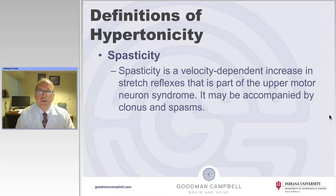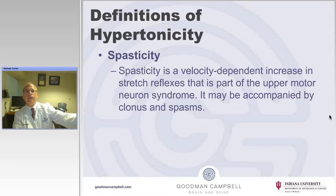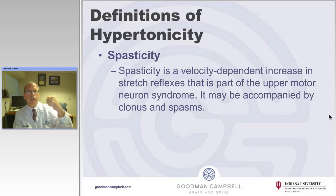Classically, there are types of hypertonicity that have been described. The first is classic spasticity, which is a velocity-dependent increase in stretch reflexes that is part of the upper motor neuron syndrome, and may be accompanied by clonus and spasm. With a spastic limb, when you slowly move it you can extend it completely; however, if you try to do it rapidly, it locks up — and the faster you try to move it, the quicker it locks up. This is called spasticity, and there are also hyperactive reflexes and clonus associated with it.